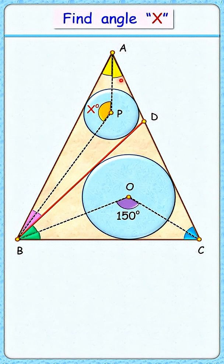Now applying the angle sum property in triangle ABC, we get 2 times (blue + green + pink + yellow) equals 180 degrees. Dividing by 2, we get blue + green + pink + yellow equals 90 degrees.